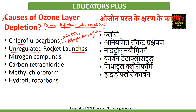Unregulated rocket launches also contribute — research says unregulated rocket launches result in much more depletion of the ozone layer than CFCs do, and if not controlled, this might result in a huge loss of the ozone layer by the year 2050. Nitrogenous compounds like NO2, NO, and nitrous oxide (N2O) are also highly responsible for the depletion of the ozone layer.